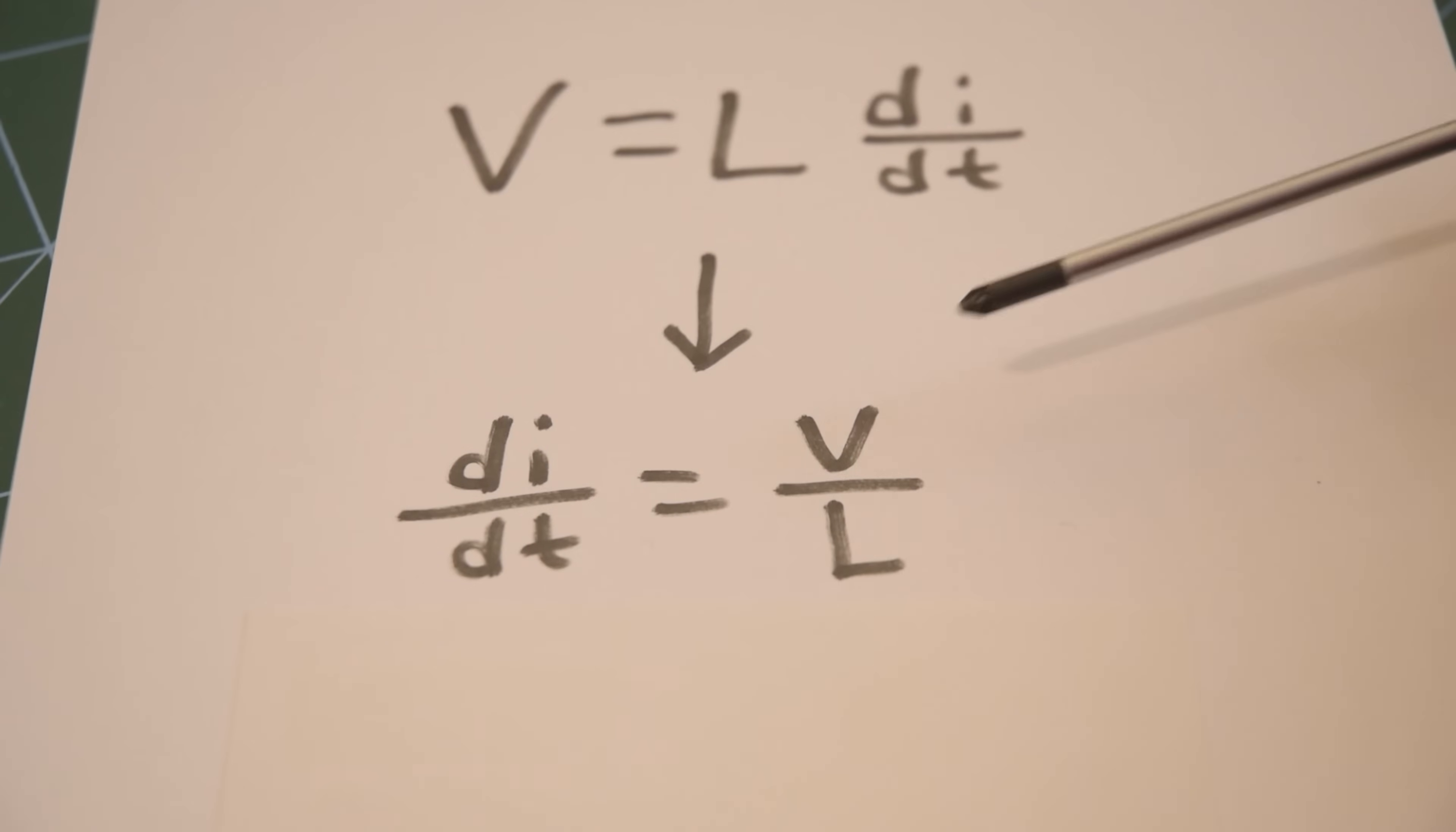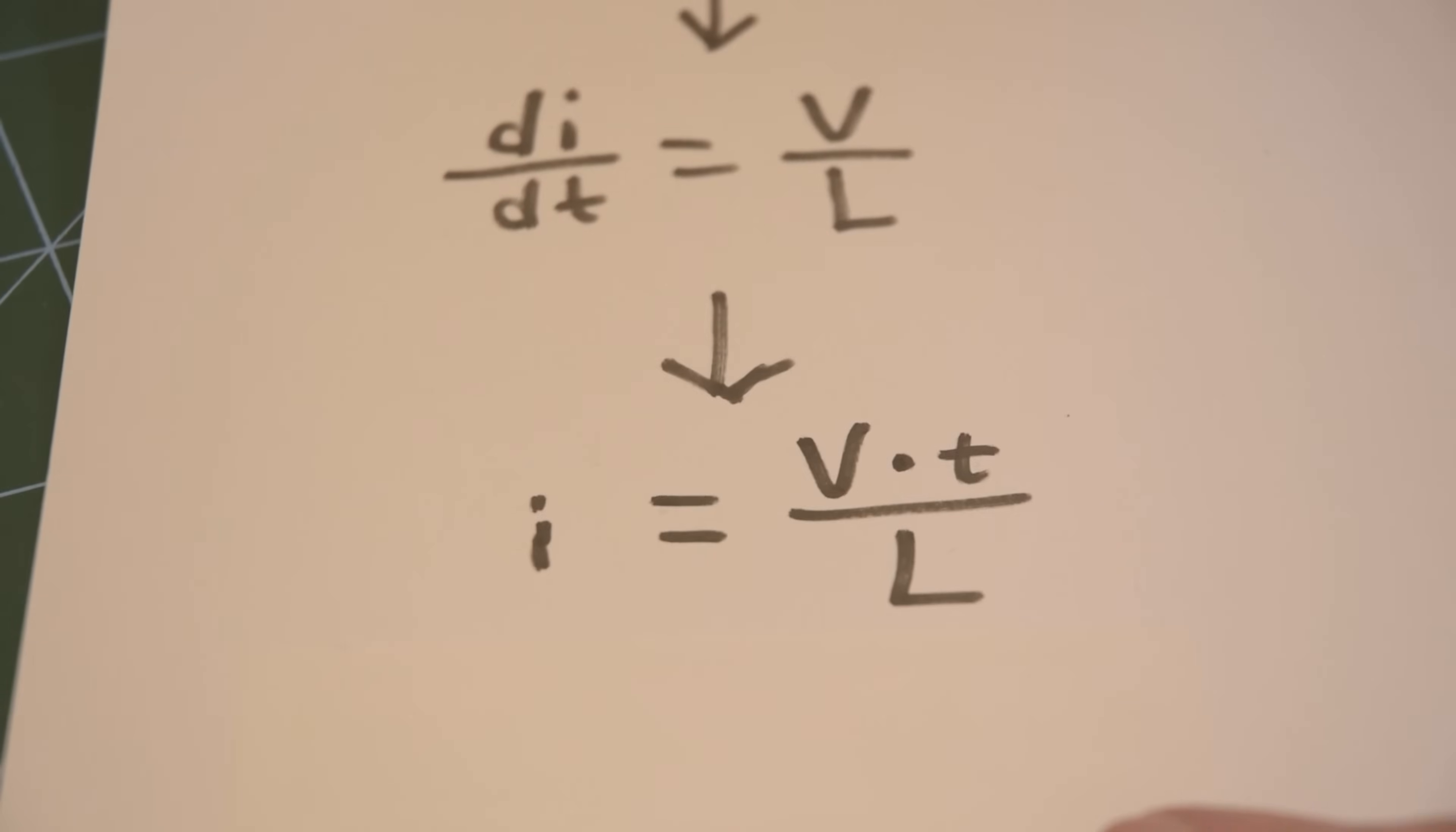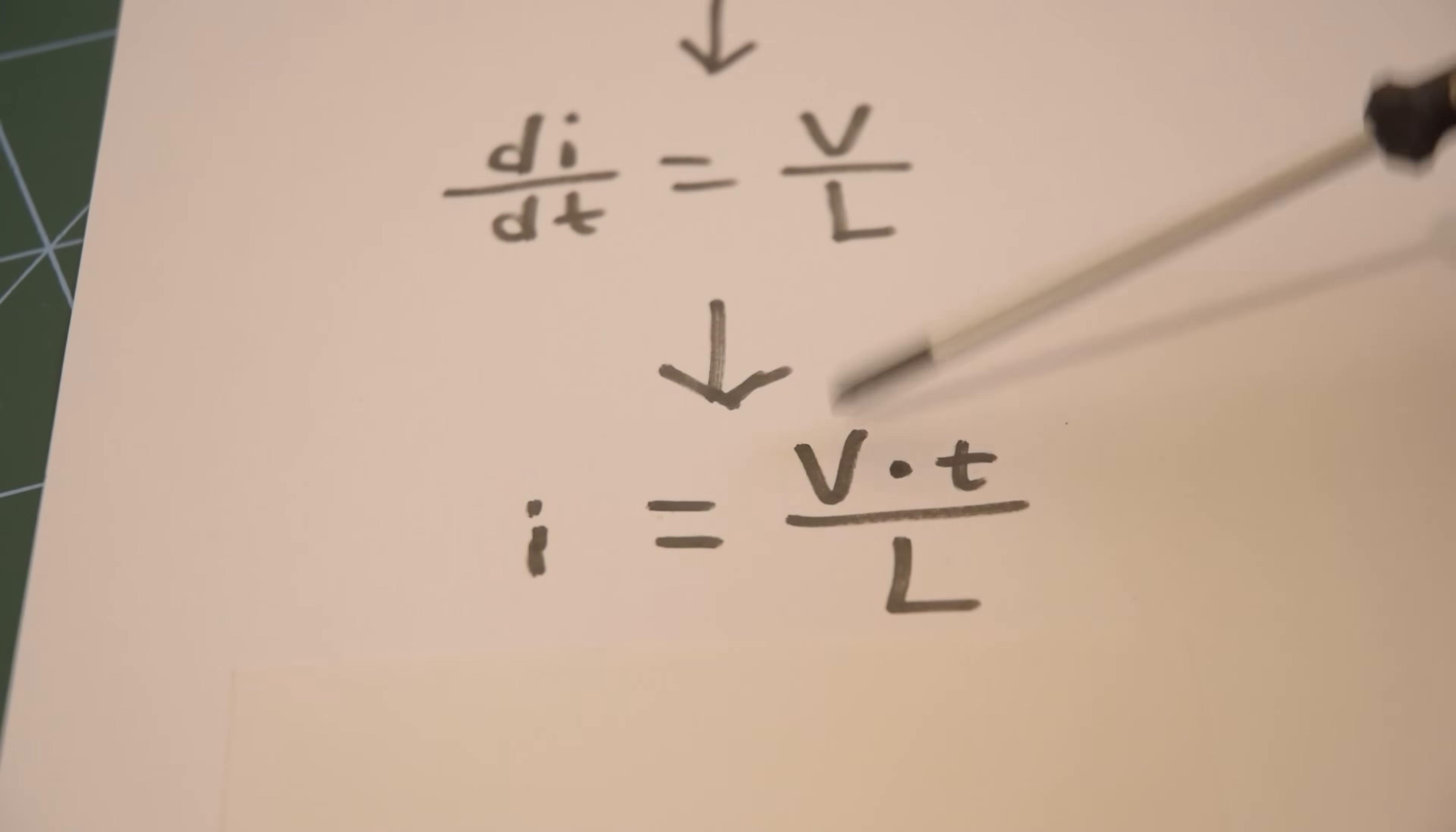So for example, one volt across a one millihenry inductor, every second the current would go up by 1000 amps. Which sounds like a lot, but normally you wouldn't have it switched on for one second. It might be, if it was on for one millisecond the current would go up by one amp. But we still don't have a current here, we've got a weird rate of current, and we just want current. So now we can sort of integrate both sides, assuming a constant voltage.